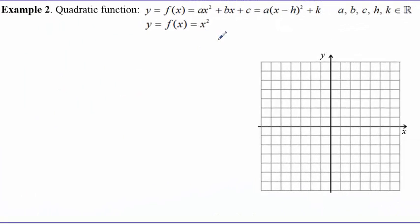The quadratic function is generally given in this form: ax² + bx + c. We can manipulate this expression and give it in a general form: a(x - h)² + k, whereby a, b, c, h, and k are real numbers. To get the basic parent function, we consider a = 1, h = 0.